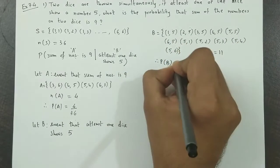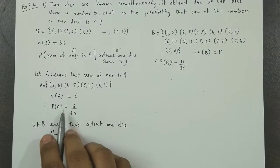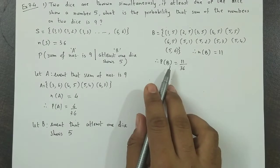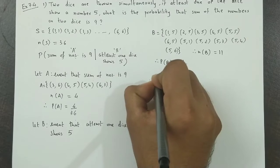Probability of B would be 11 by 36. So we have probability of A, probability of B. Now in conditional probability, we have A intersection B. So A